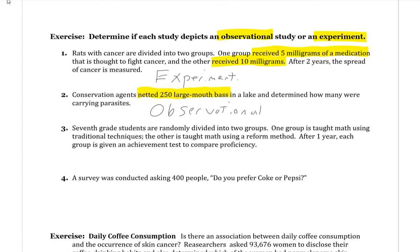Third: seventh grade students are randomly divided into two groups — one is taught math using traditional techniques, the other using reform method. After one year, each group is given an achievement test to compare proficiency. Like the rats example, we have two groups receiving different treatments. There are treatments involved — individuals are receiving something they didn't already have. So this is considered an experiment.